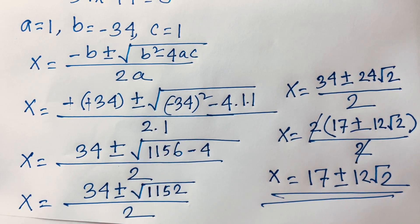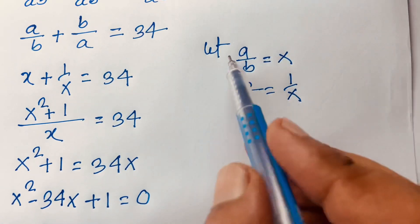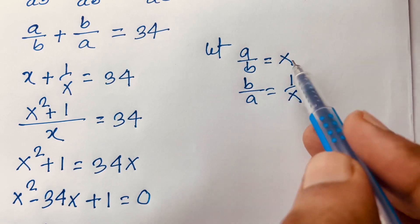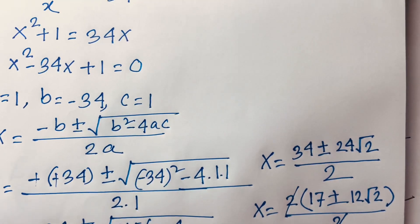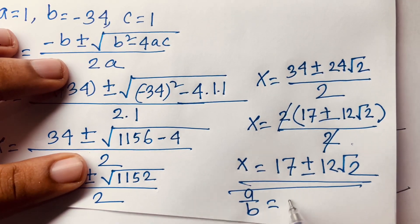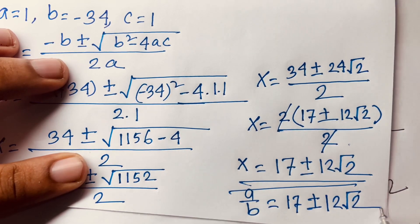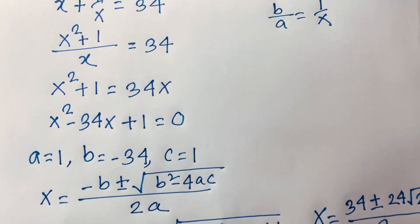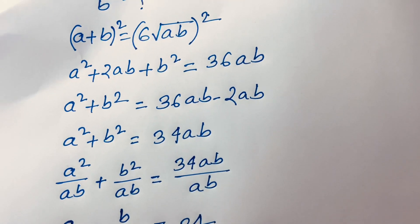So this is our final answer, because we set X equal to A over B, and our target is the value of A over B. So A over B is equal to 17 plus or minus 12 square root 2. This is our final answer. Thank you all. If you enjoy this video, please subscribe to my channel and like this video. Goodbye, take care.